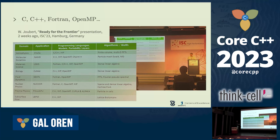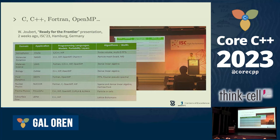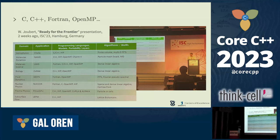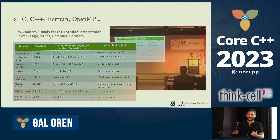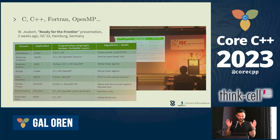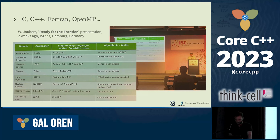For intuition: at ISC in Germany there was a talk about making applications ready for the Frontier exascale system. The top 10 applications running on that supercomputer are mostly C, C++, Fortran, and OpenMP. When we really want to get this kind of performance in a hybrid system, we end up using these APIs.